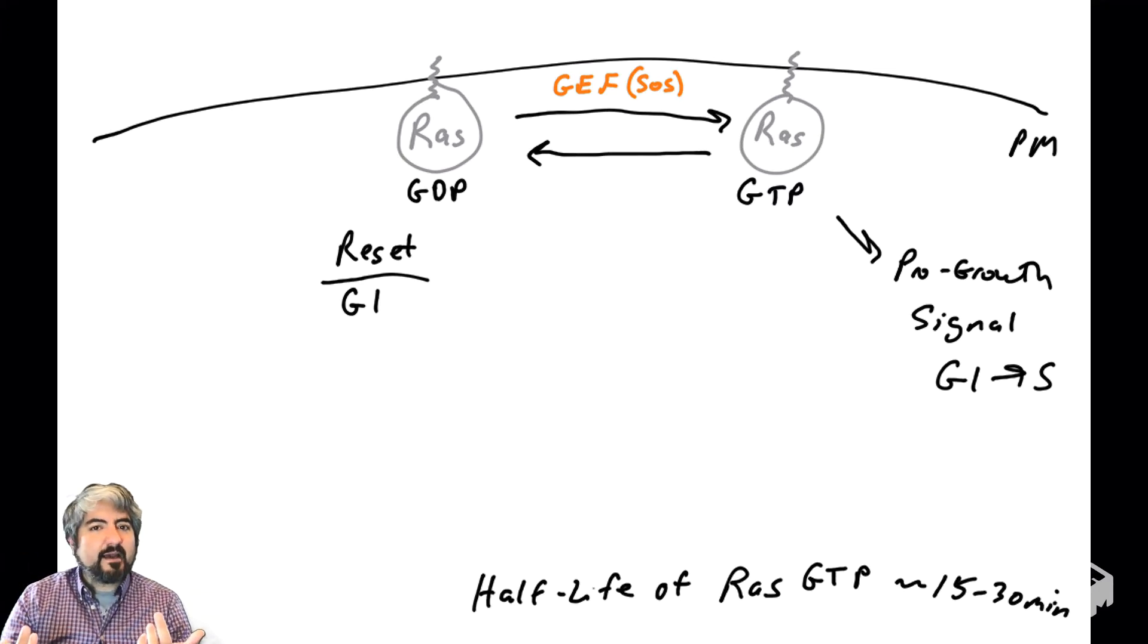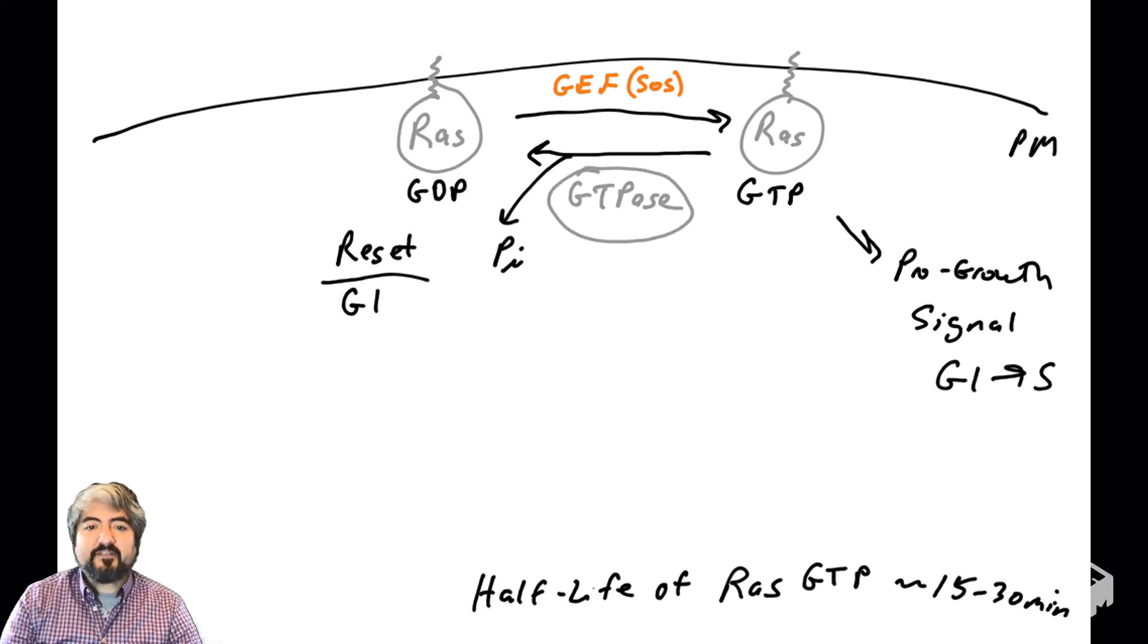If you think about it, there's one very simple way to make it go back: remove that phosphate. You got three phosphates in the GTP, two phosphates in the GDP. Just take off a phosphate. And that's exactly what happens. An enzyme called a GTPase breaks down GTP, removes that phosphate. That's how you reset RAS.